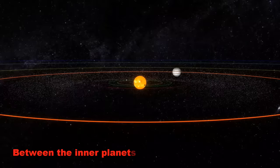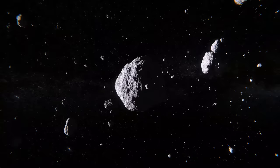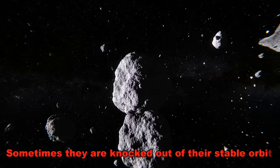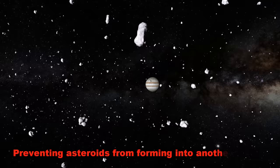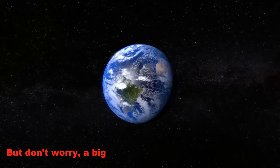Between the inner planets and outer planets, there are billions of asteroids orbiting in a belt around our star. Sometimes they are knocked out of their stable orbit, and they might collide with Earth if they don't avoid it. Why the belt? Well, it has to do with Jupiter, you see. It pulls on the belt with its massive gravity, preventing asteroids from forming into another planet. But don't worry, a big one can't hit Earth soon, or can it?